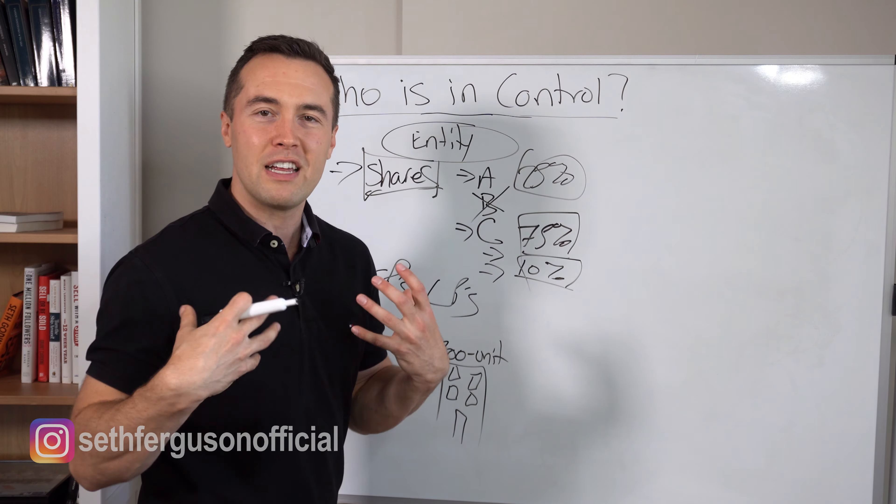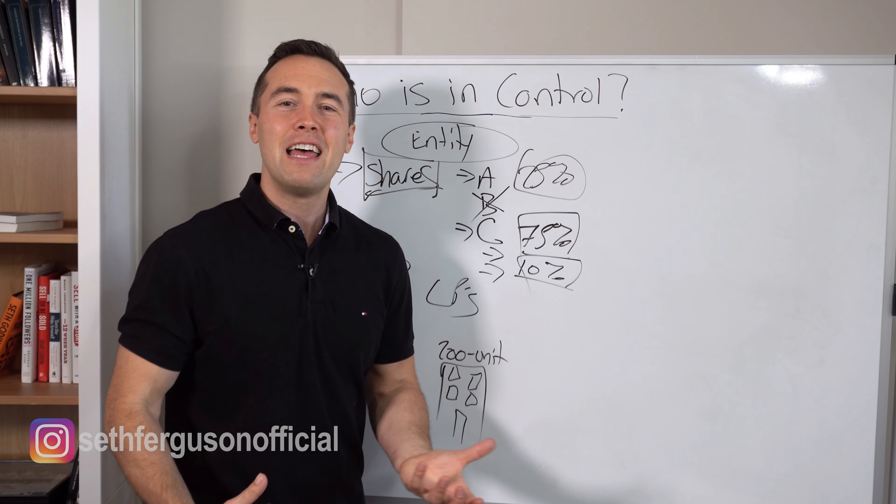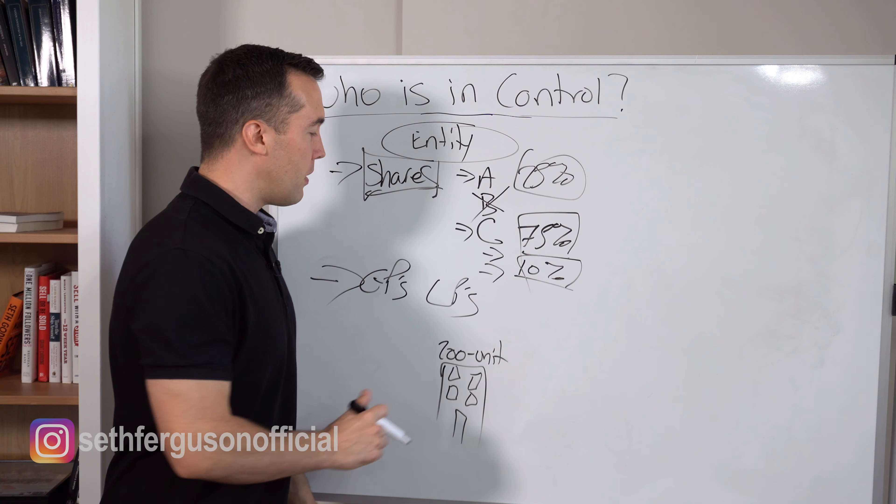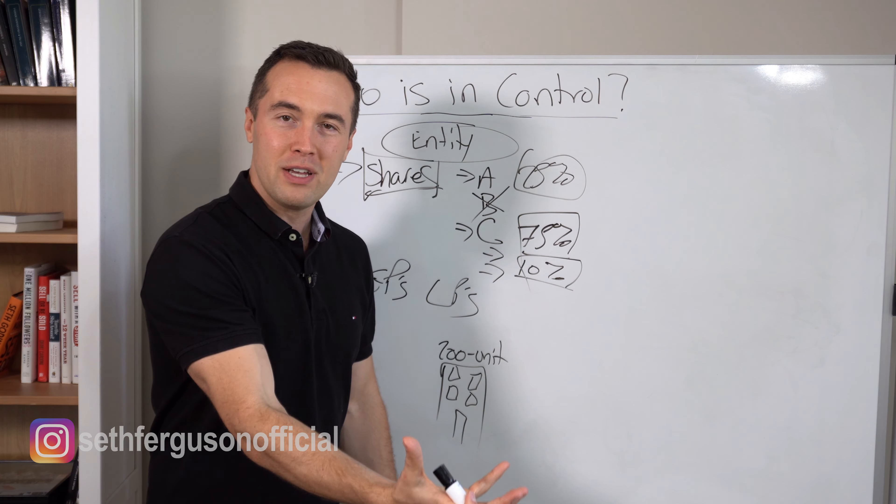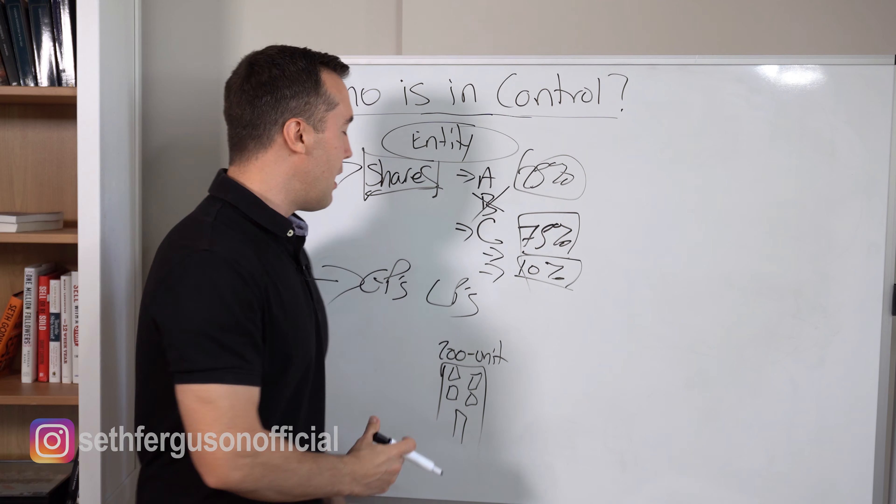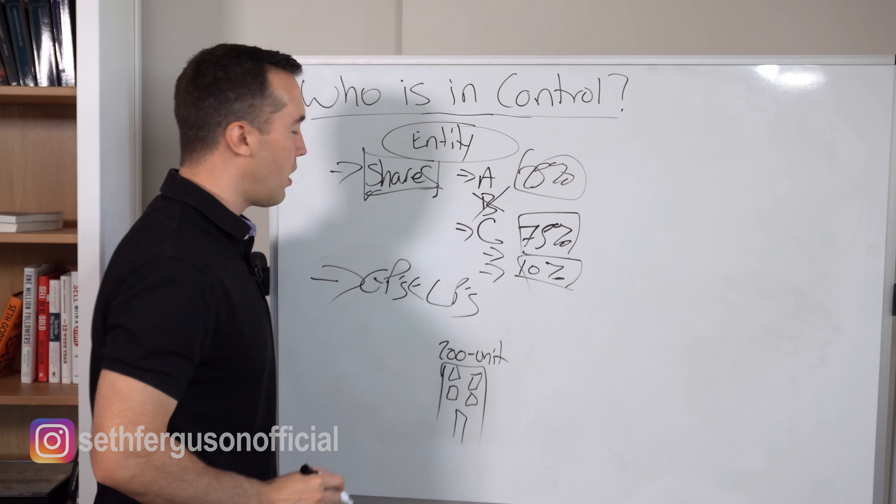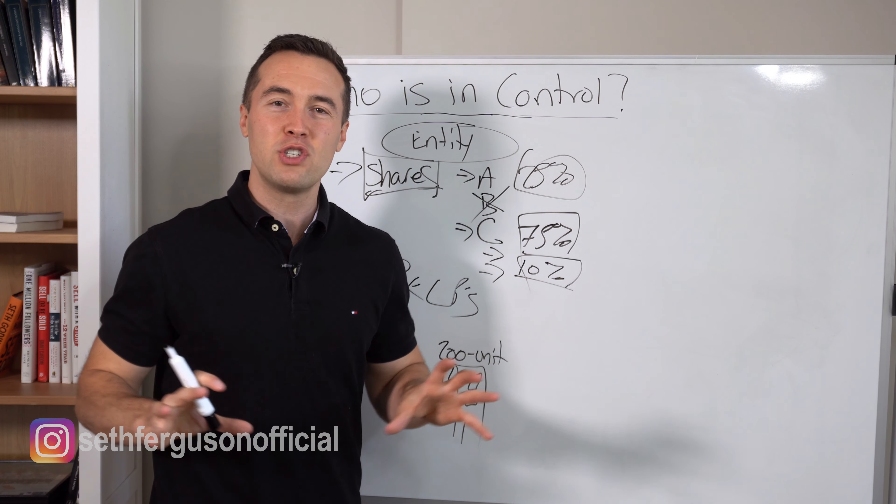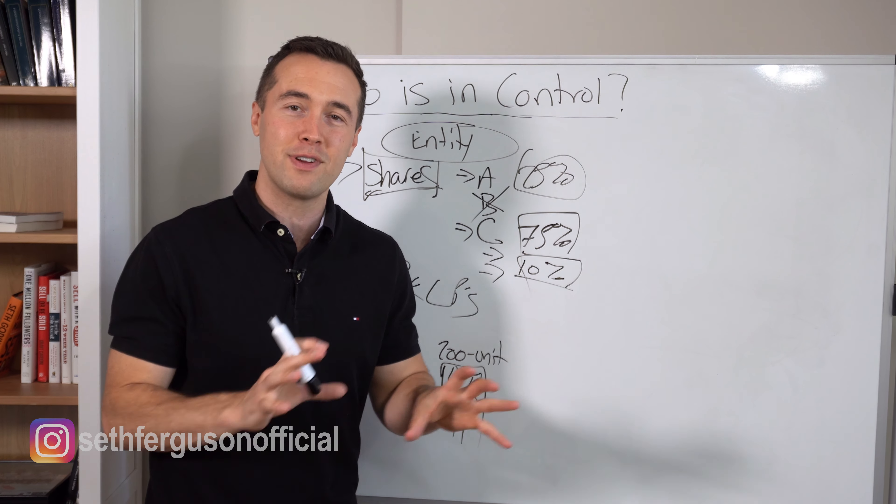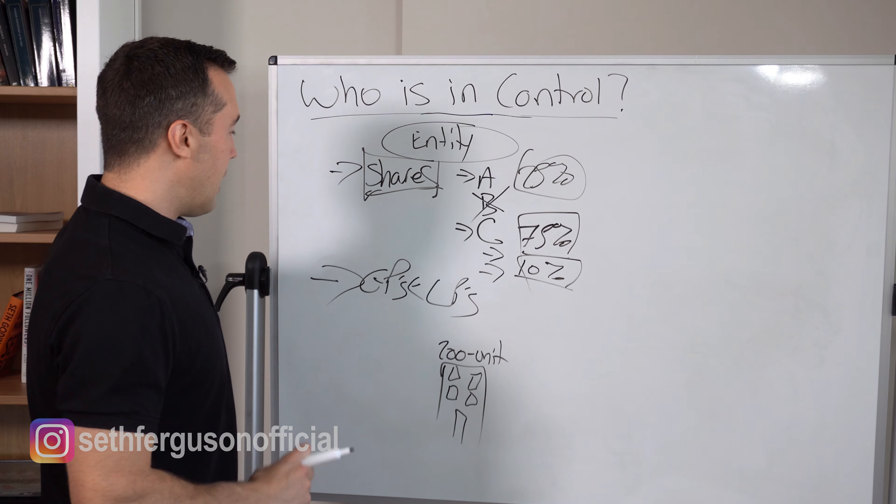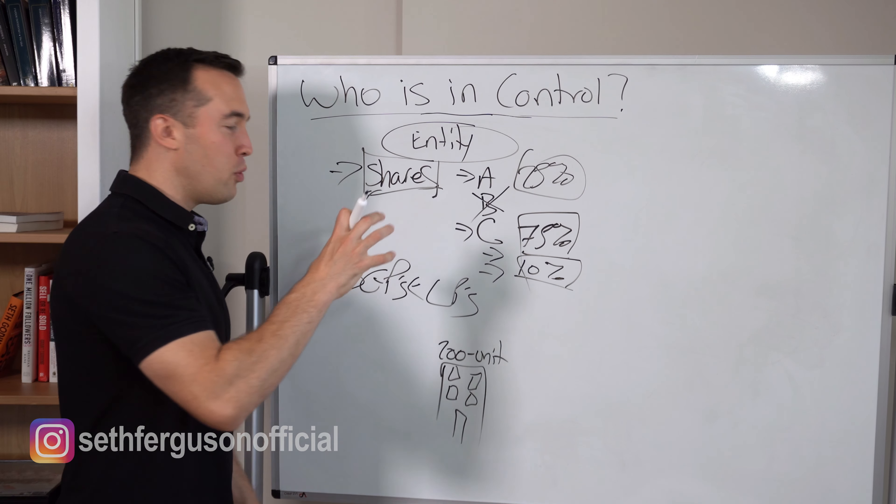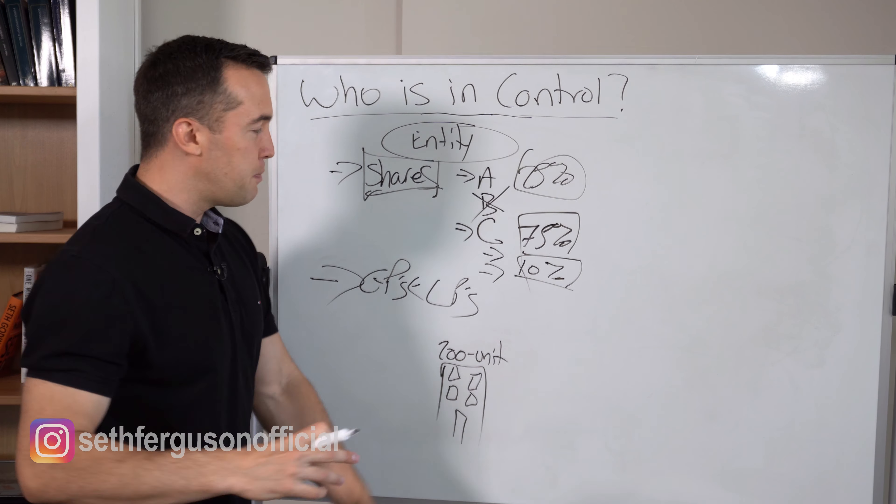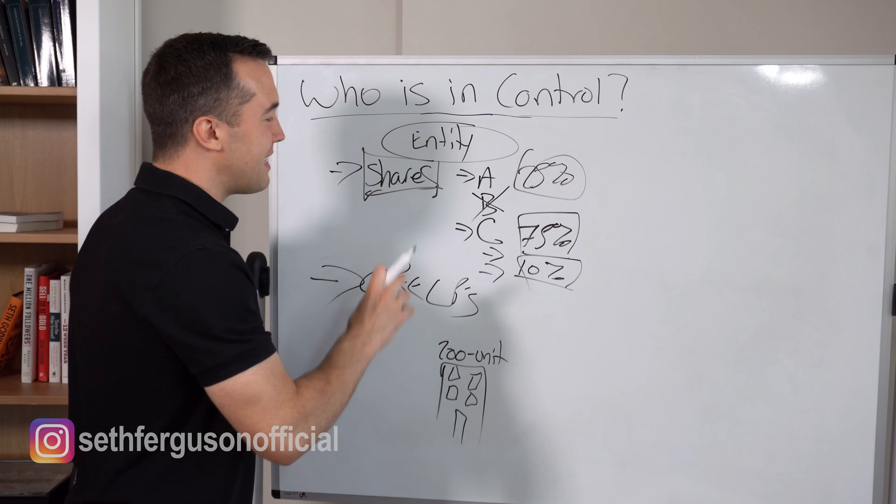Just like with any other investment, their capital is at risk. But the GPs, the general partners, are the people with the real estate experience. They have the track record. They are actually shouldering the risk when it comes to managing the deal. The LPs have their capital at risk just like with any other investment, but it's the GPs, in case something goes wrong, the GPs shoulder all the risks. This is why the syndication structure is a beautiful structure for passive investing in real estate.